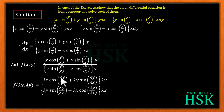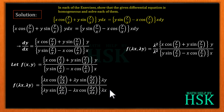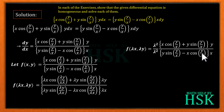Inside the trig ratios, the λ in numerator and denominator cancel out. Both terms in the numerator and denominator each contain a factor of λ, so we take λ as common from both. This gives f(λx, λy) equal to λ² times [x·cos(y/x) + y·sin(y/x)]·y, over λ² times [y·sin(y/x) − x·cos(y/x)]·x, which equals λ⁰ times f(x, y).